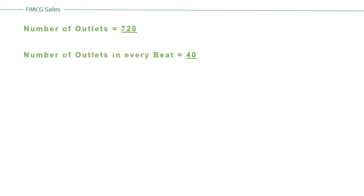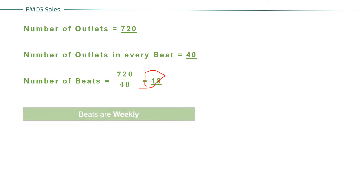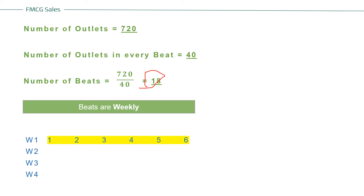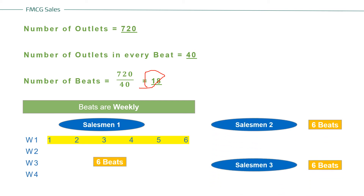Let's take one more example. Here, the number of outlets is 720. With 40 outlets per beat, 720 divided by 40 equals 18 beats. Our target is to cover 18 beats. If all beats are weekly, the same concept applies — four weeks, each with six working days, so each salesman covers six beats every month.